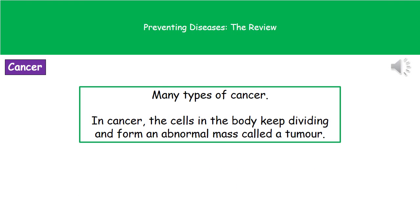There are many different types of cancer and they can occur all over the body. What cancer actually is is where cells in your body start to divide and just keep on dividing. By dividing in that uncontrolled manner, they keep making more and more new cells, forming an abnormal mass — which is what a tumour actually is.